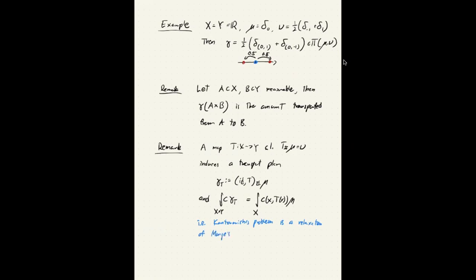So if you want, you could think of it like in Monge's problem, we are minimizing a cost function over something which is not convex, not compact. And then in Kantorovich problem, we are extending the set of admissible points we are optimizing over. And then we get something which is instead both compact and convex.